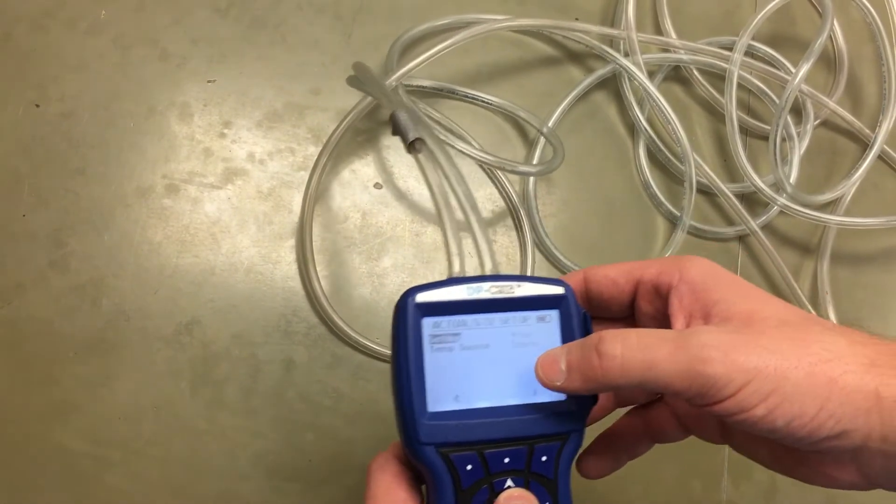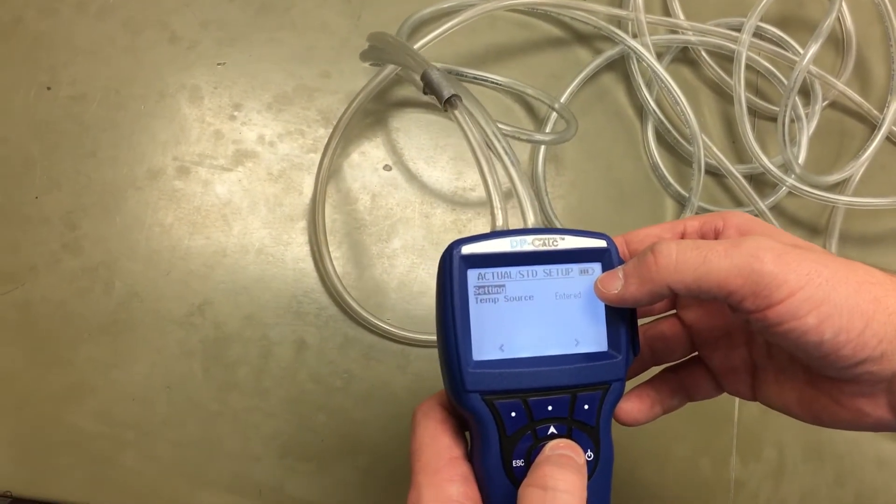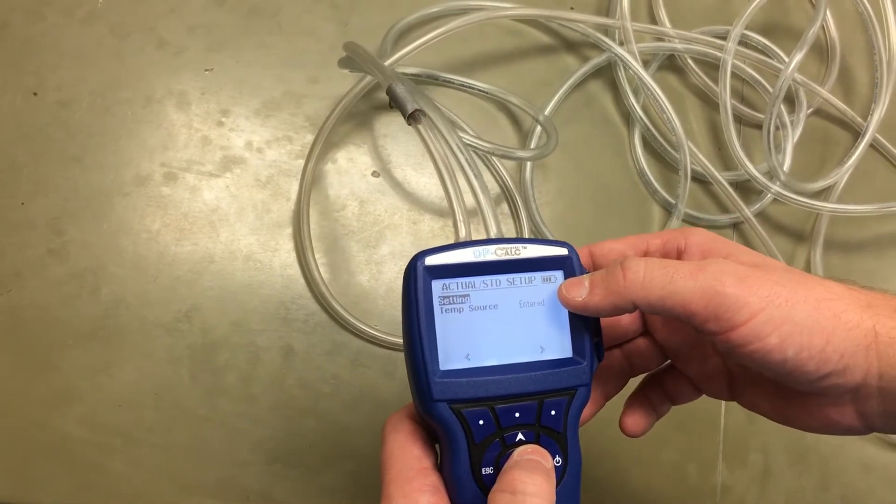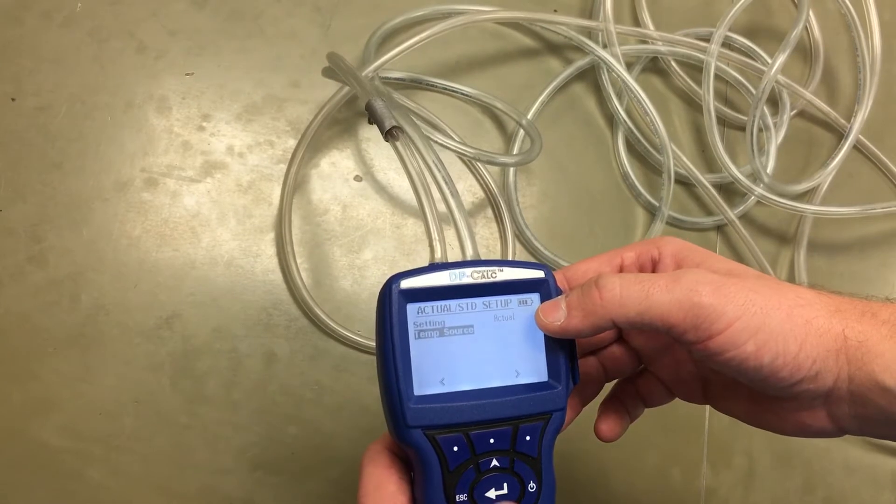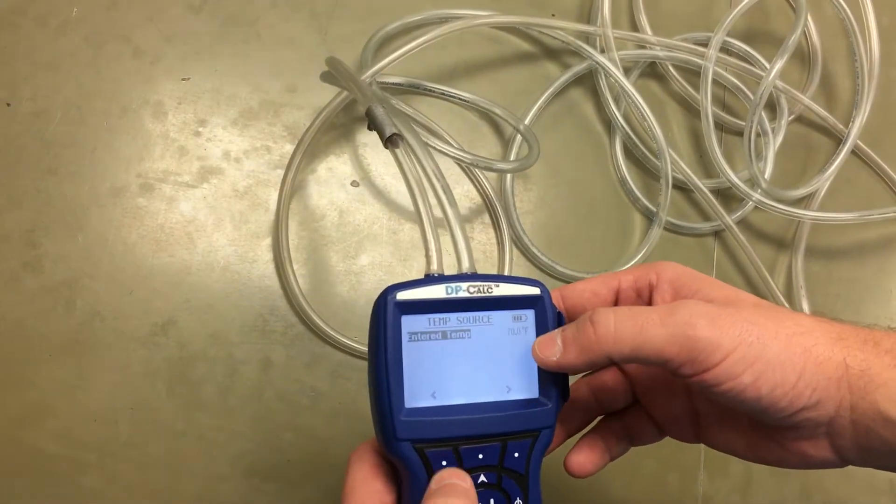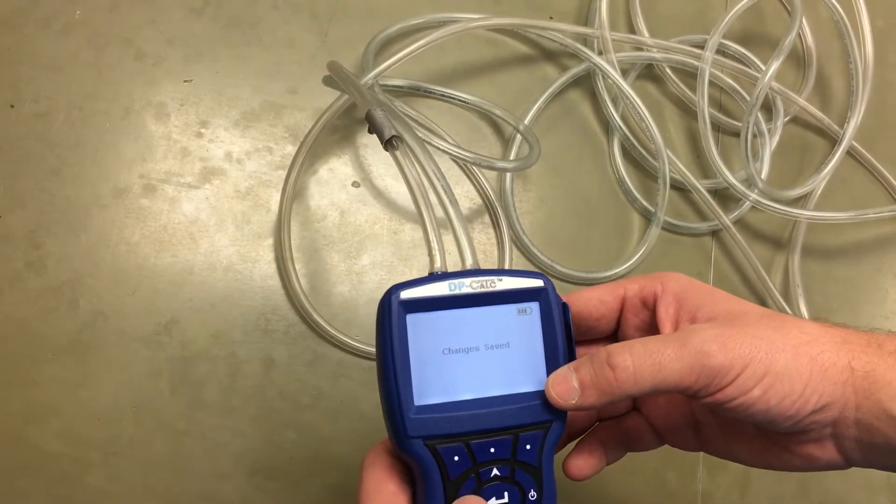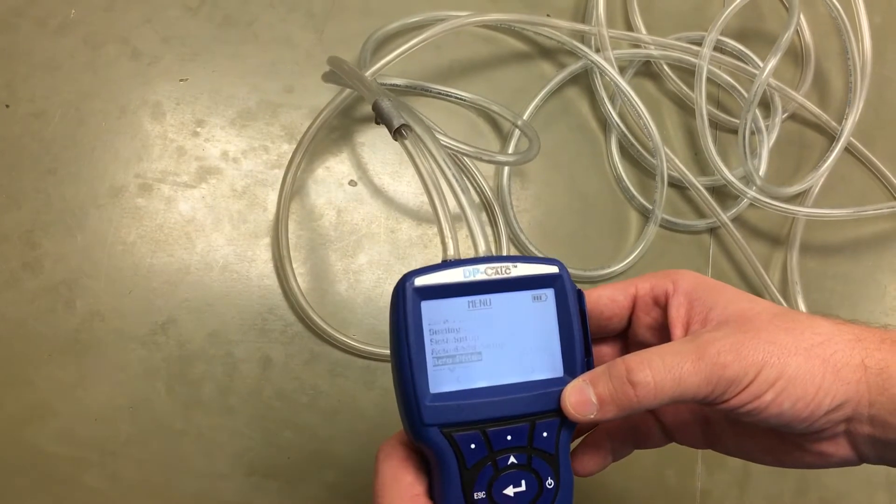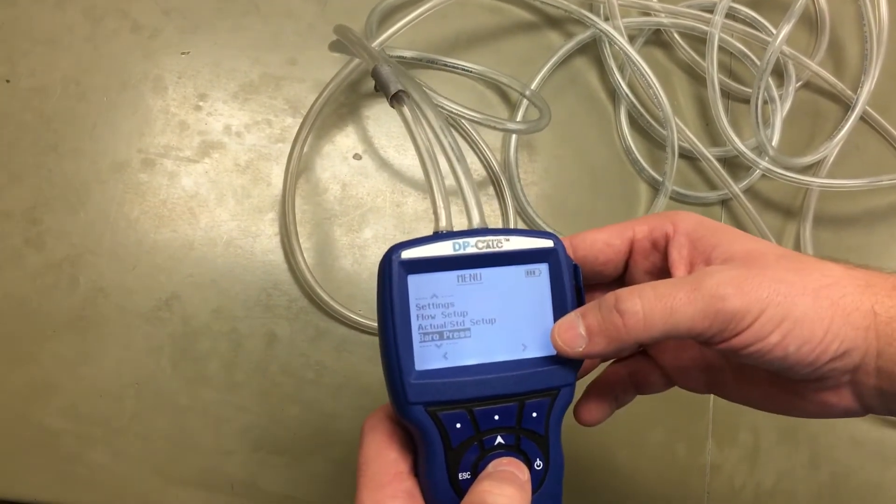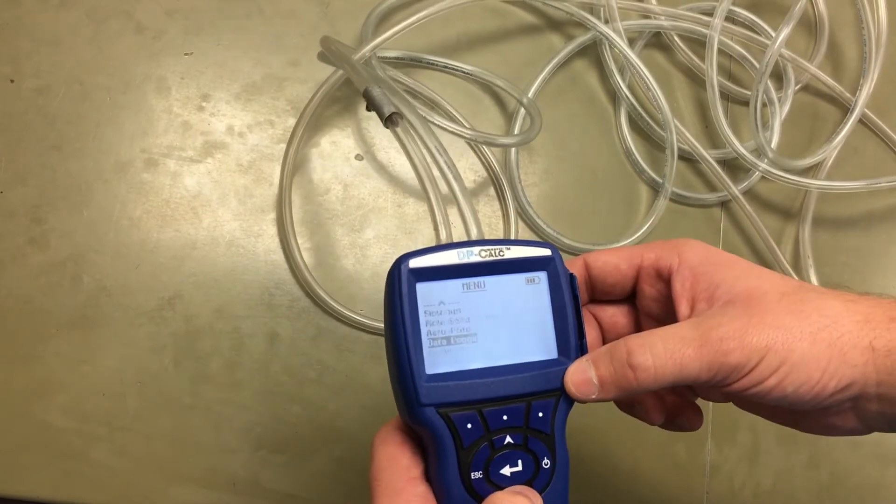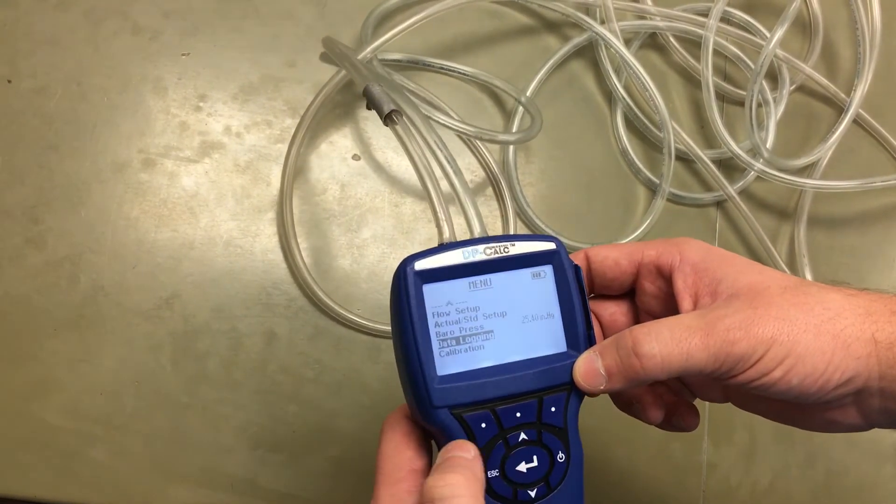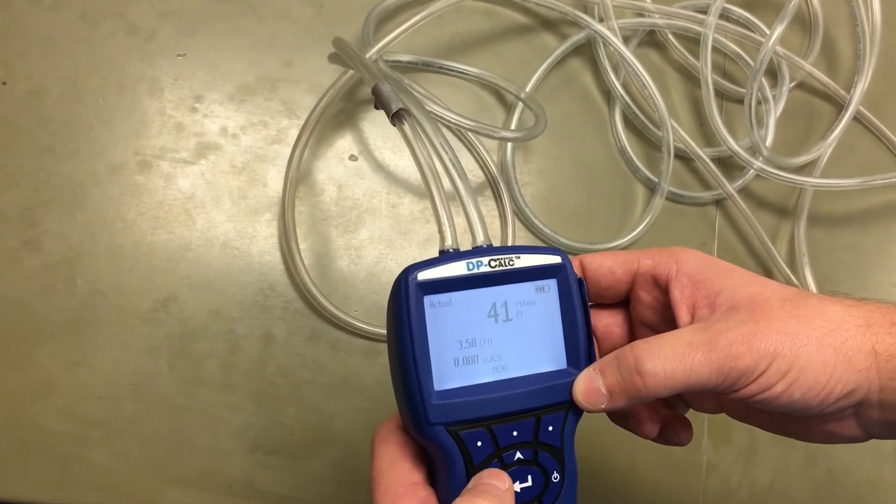Select either actual or standard. We're going to have it measure actual pressure so that we don't have to adjust our measurement for the pressure at our altitude. Set the temperature to 70 degrees and set the barometric pressure, which at our location is 25.4 inches of mercury. We're ready to measure.